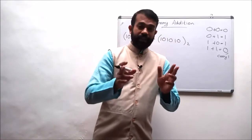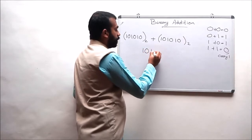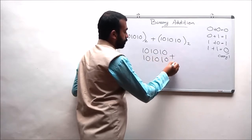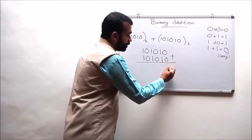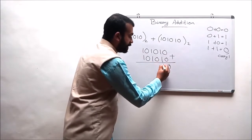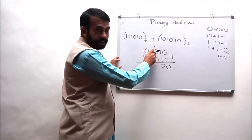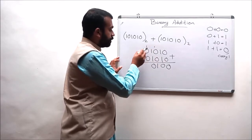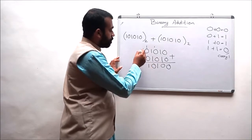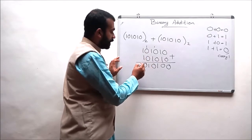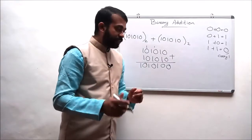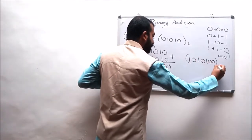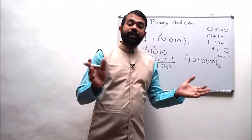Let us consider another example: 1 0 1 0 1 0 is adding with 1 0 1 0 1 0. We are starting from the LSB position. 0 plus 0 is 0. 1 plus 1 is 0 with a carry of 1. 1 plus 0 is 1. 1 plus 0 is again 1. 1 plus 1 is 0. 1 plus 0 is again 1. 1 plus 1 is 0 with a carry of 1. So the final result is 1 0 1 0 1 0 0 to the base 2. This is how we are adding different binary numbers.